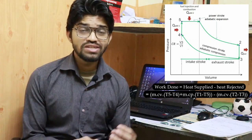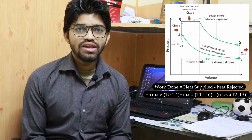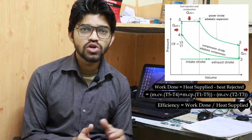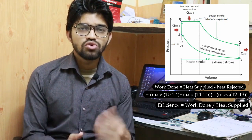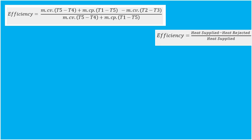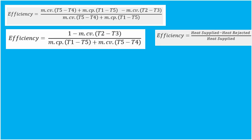Now let's move to the efficiency of the dual combustion cycle. Efficiency is the ratio of total work done to heat supplied. Substituting the expressions, we get: η = [m × Cv × (T5 − T4) + m × Cp × (T1 − T5) − m × Cv × (T2 − T3)] divided by [m × Cv × (T5 − T4) + m × Cp × (T1 − T5)]. This simplifies to: η = 1 − (heat rejected / heat supplied) = 1 − [m × Cv × (T2 − T3)] / [m × Cp × (T1 − T5) + m × Cv × (T5 − T4)].